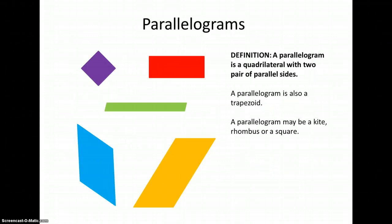A parallelogram is a quadrilateral of two pairs of parallel sides. Here, we don't particularly care about the angle measure. We only care that opposite sides are parallel to each other. So the top and bottom are parallel, and the left and the right sides are parallel. A parallelogram is also a trapezoid. And that might be a kite, a rhombus, or a square, if we choose a special parallelogram.